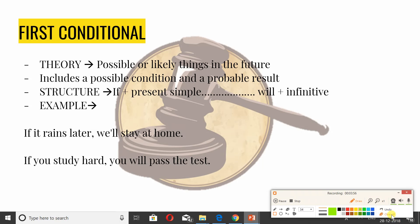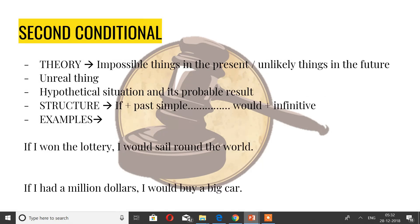Next up, we have second conditional. In theory, it's basically impossible things in the present or unlikely things in the future. First conditional dealt with things that are possible, but second conditional deals with things that are not possible. It's a hypothetical situation and its probable result. If you look at its structure, it is: if plus past simple tense, then would plus infinitive. So, if I won the lottery, I would sail around the world. If I had a million dollars, I would buy a big car. The very mistake students do is, see, it's the second form, it's the past simple form here.